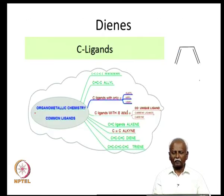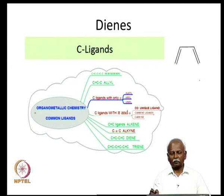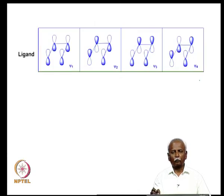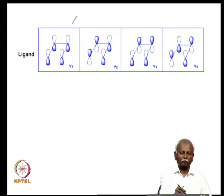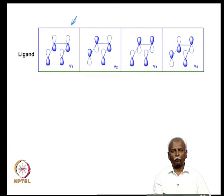Dienes are compounds where you have two double bonds strung together, and they are quite common in organometallic chemistry. If you look at the molecular orbital components of the pi system in a diene, you will notice that the most stable, lowest-energy pi bonding orbital is labeled psi 1. It has the phase of all four p orbitals the same, so there is no node in the pi orbital manifold.